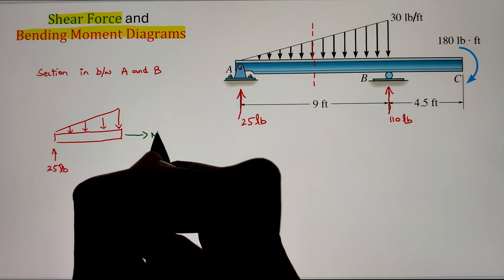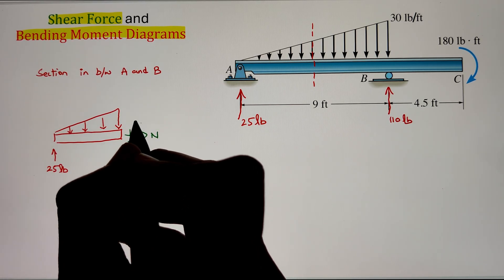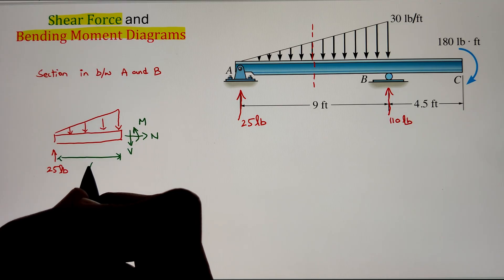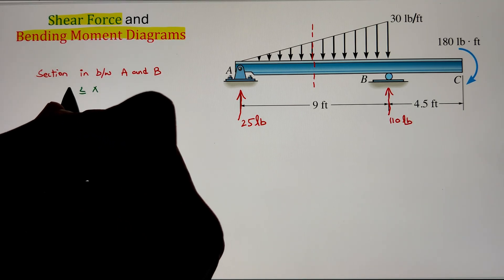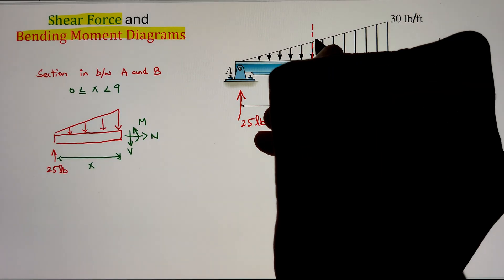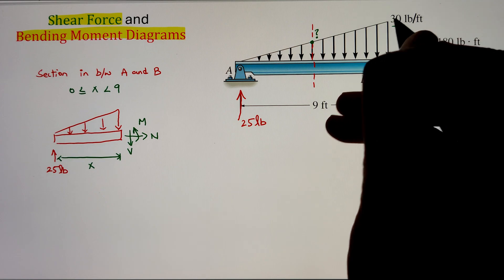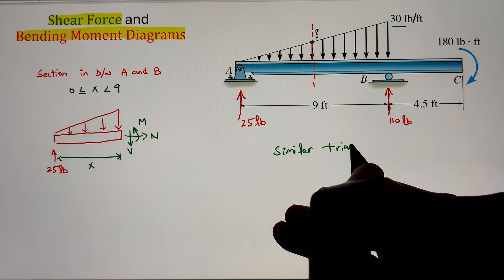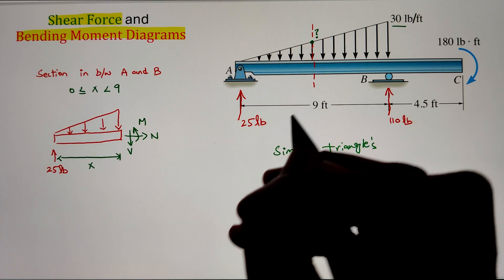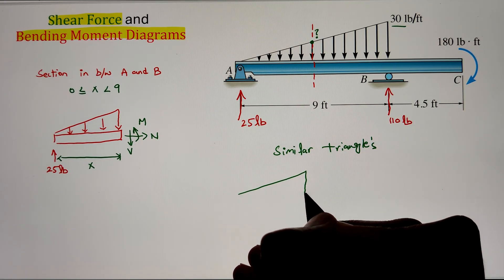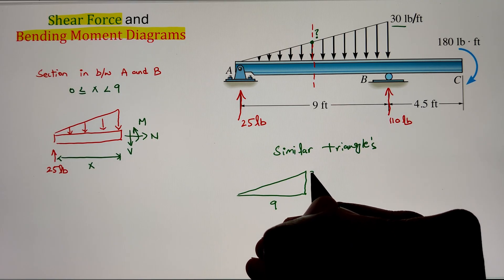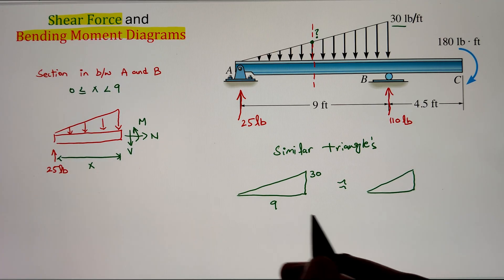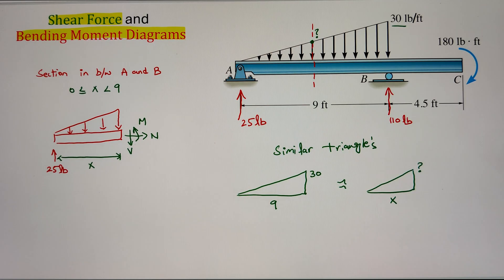Whenever we make a cut, there will be internal forces that become exposed. In this case we have three total internal forces: one is the normal in the horizontal direction, the other is our shear force in the vertical direction, and then we have our couple moment given by variable M. Since we have made a cut in between point A and B, the value of X lies from 0 all the way to less than 9 feet. Since the value is less than 9, we are not including the force at point B. Now, since we have the triangular loading, we need to find the magnitude at the top of the triangle. To figure out that value, we can utilize our similar triangle principle.